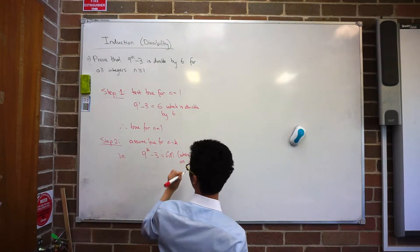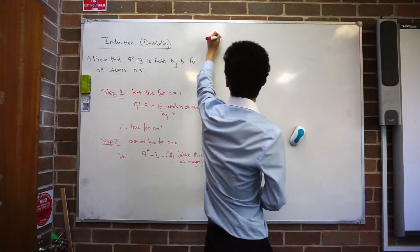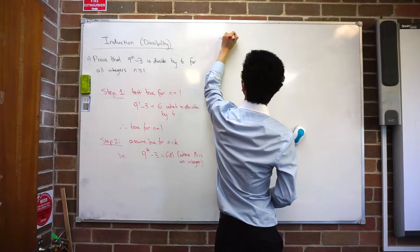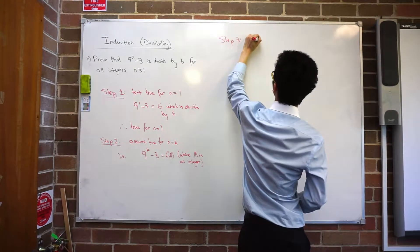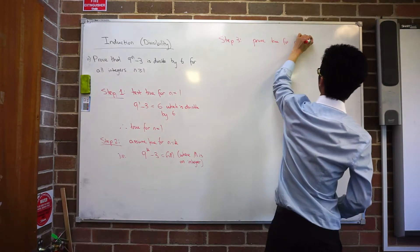Now the best part... Save the best philosophy for you, Mitch. What is step 3? Prove true for k plus 1. Alright, prove true for n equals to k plus 1.